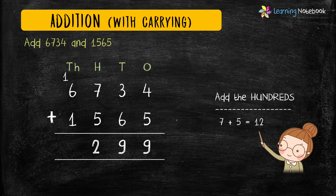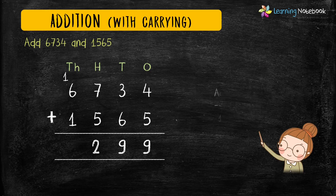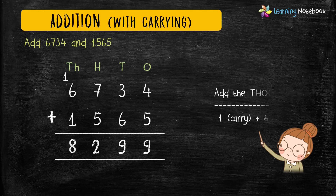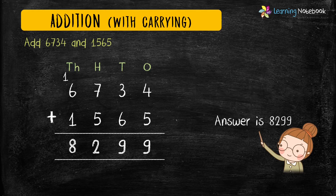Since 12 is a two digit number, we will carry 1 to the thousands place and 2 comes in the answer. Now in the end, add the digits at thousands place: 1 carry plus 6 plus 1 equals 8. So our answer is 8299.